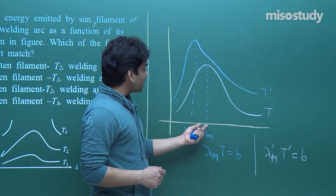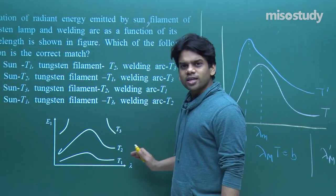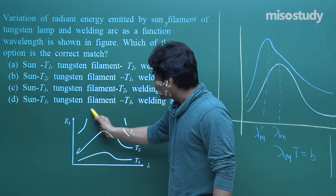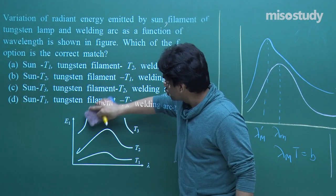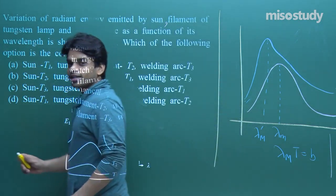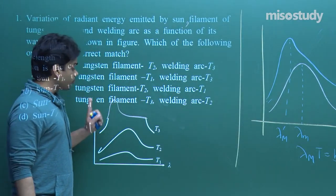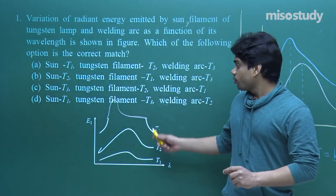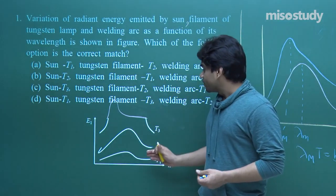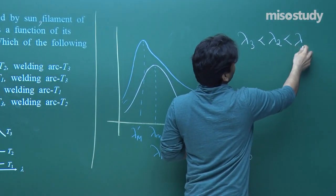This question came in a previous examination. The curve was given such that the topmost curve is at the extreme left. Lambda will be minimum for T3 temperature, then for T2, and maximum lambda for T1. So we can write: lambda_3 is less than lambda_2 is less than lambda_1.